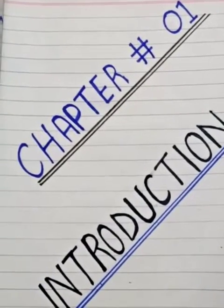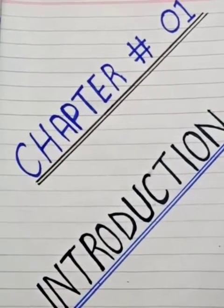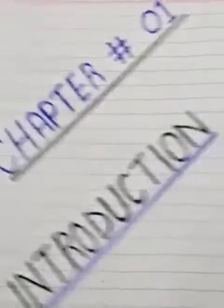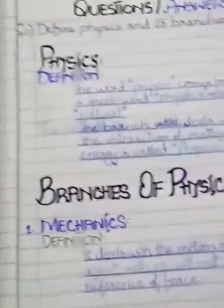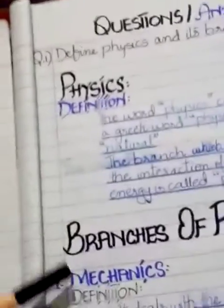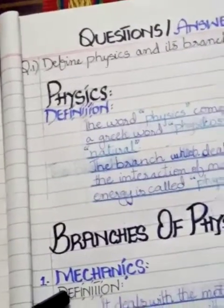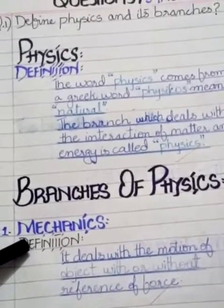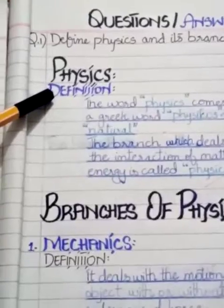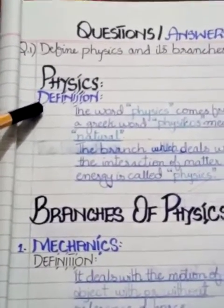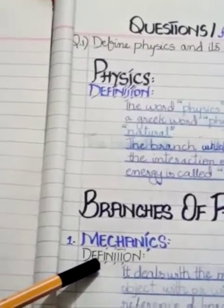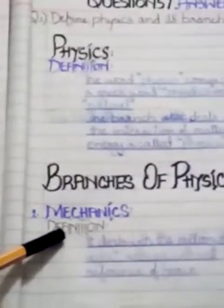To summarize: use black for the main heading, blue for subheadings, and a black pointer for side headings. I hope you all understand. Thank you so much.